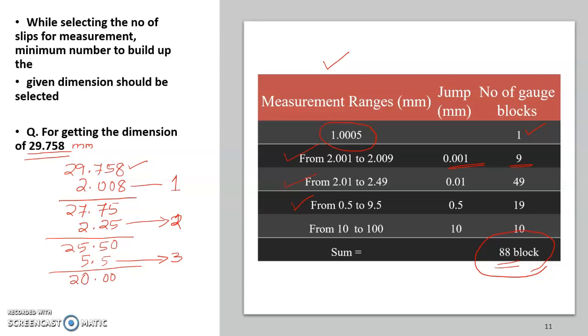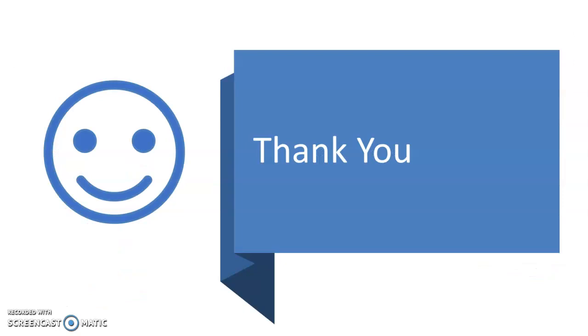And 20 is available in this range, that is 10 to 100 is available. So from there we will choose the 20 and that would be our fourth slip gauge. So we have got a stack of 2.008, 2.25, 5.5, and 20. So this is how we are making the required dimensions. Thank you for watching.